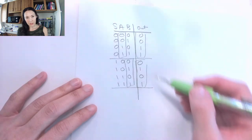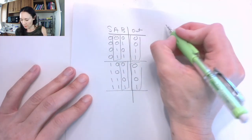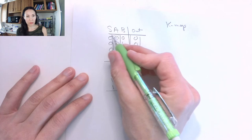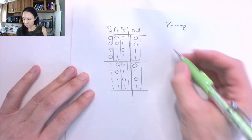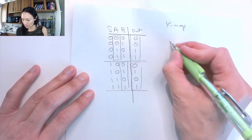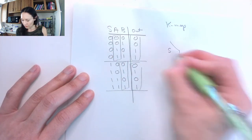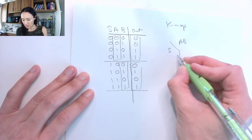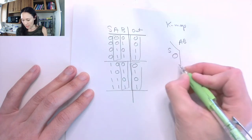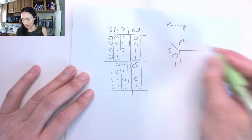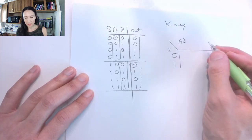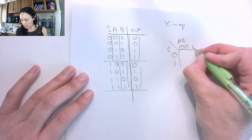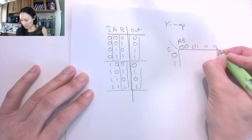We can actually put this into a Karnaugh map. Since we have three inputs — s, a, and b — the K-map looks like this. We've got s here and a and b up here. The possibilities for s are either 0 or 1. The input combinations for a and b are: 00, 01, 11, 10.